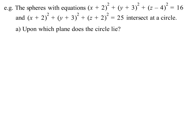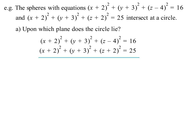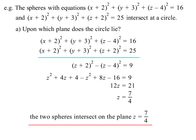First of all, they want us to find the plane that it lies on. They've been very nice to us with these simultaneous equations, because you'll notice the (x + 2)² is the same in both, and the (y + 3), they will eliminate very nicely. And we get (y + 2)² - (z - 4)² = 9, and I end up with just z = 7/4. So it's a plane which is parallel to the xy plane, but at a height of 7/4.